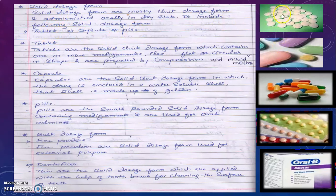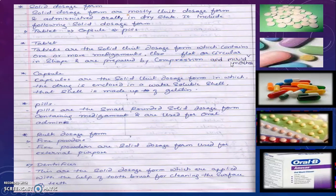These are pictures of tablets. Tablets may be circular or flat depending upon the weight of the tablet. Tablets are the solid unit dosage forms which contain one or more medicaments. Usually they are flat or circular in shape and are prepared by compression method using a compression machine.